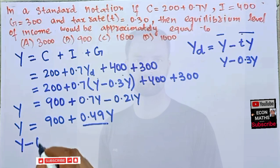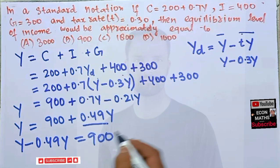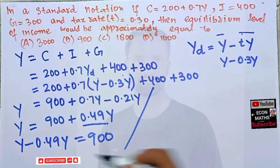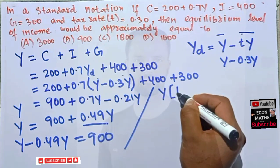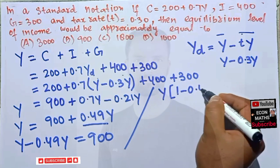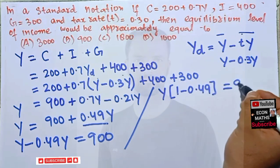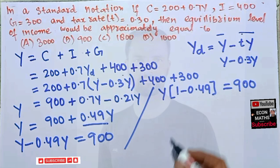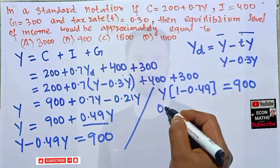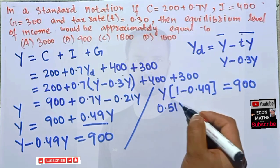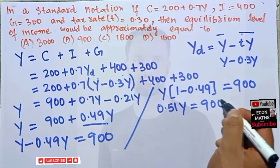So just transposing this term to LHS, so this is here positive, this will become negative. So we have Y minus 0.49Y is equal to 900. Or we can write it like this, we can actually factor it out Y, so we are left with 1 minus 0.49 is equal to 900. Now this is 0.51Y is equal to 900.